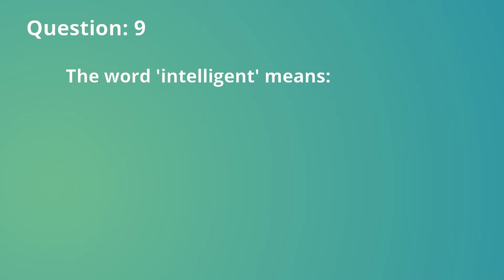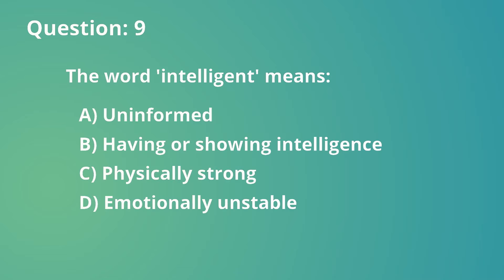Question number 9. The word intelligent means: a. Uninformed, b. Having or showing intelligence, c. Physically strong, d. Emotionally unstable.